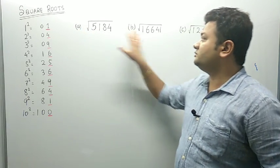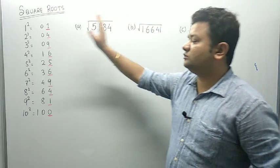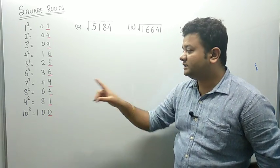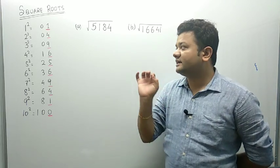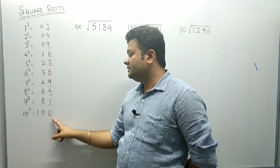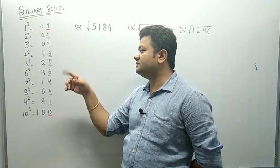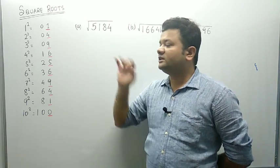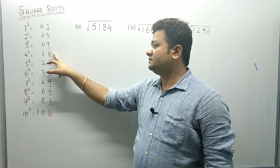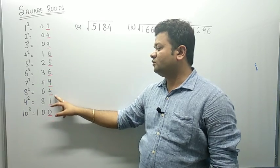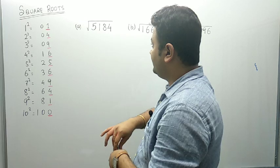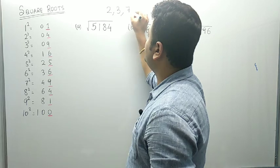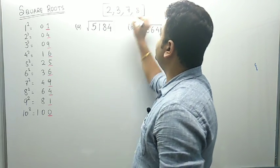Before starting square root, I have written here three different numbers. Now on the left-hand side of the board, I have written squares starting from 1 up to 10, and I have highlighted one place — that place is called the unit space. Now if you observe the squares from 1 up to 10, in the unit space some digits are present: 1, 4, 5, 9, 6, and 0. We know digits run from 0 to 9. Out of these, you will find that digit 2 is not present, digit 3 is not present, digit 7 is not present, and digit 8 is not present.